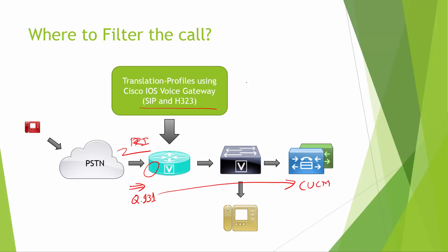There is also another limitation: this method uses translation rule sets, and we can define a maximum of rules 1 through 15. So we cannot have more than 15 rules inside a rule set referenced by the translation profile. We are limited to 15 rules, meaning we can match roughly 15 ANIs — or more if using ranges — but at some point we are limited to only a few ANIs.